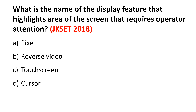Next question: What is the name of the display feature that highlights the area of the screen that requires the operator's attention? The answer is cursor. When you open Notepad and write something, you can see the cursor blinking — it highlights the area of the screen where the operator's attention is needed. The right answer is option B: cursor.